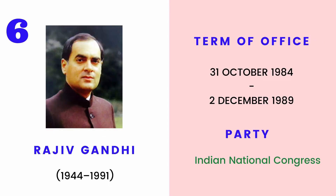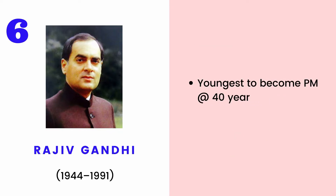Rajiv Gandhi served as the 6th Prime Minister of India from 1984 to 1989. He took office after the 1984 assassination of his mother Indira Gandhi, becoming the youngest Indian Prime Minister at the age of 40.